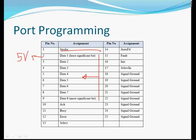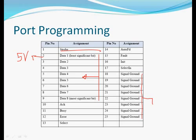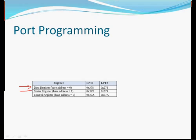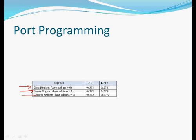From each and every data pin we can get 5 volts out to the real world, so we can flash an LED or do anything as we like. Pins 18 to 25 are ground pins — we can use any or all of these pins. There are three types of registers in the parallel port: the data register, the status register, and the control register.